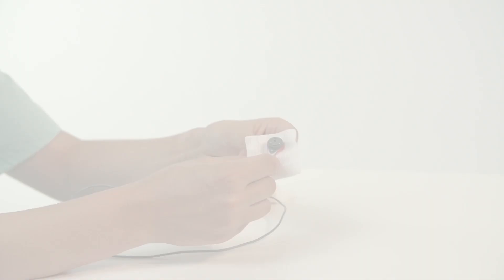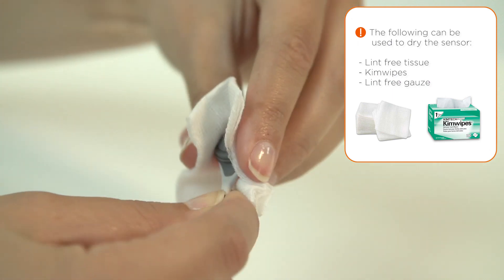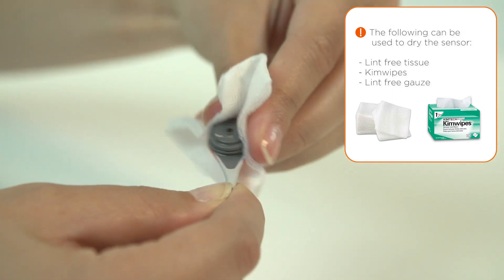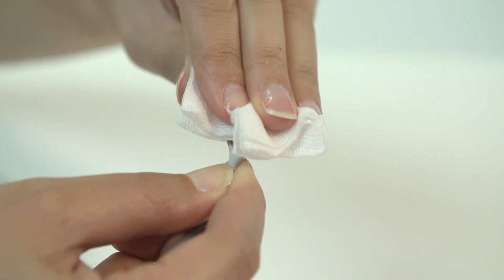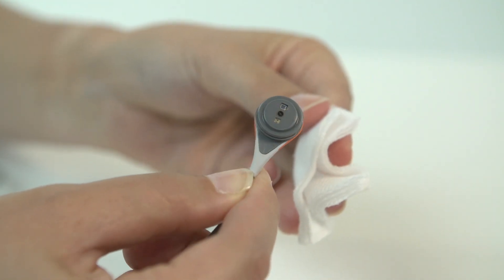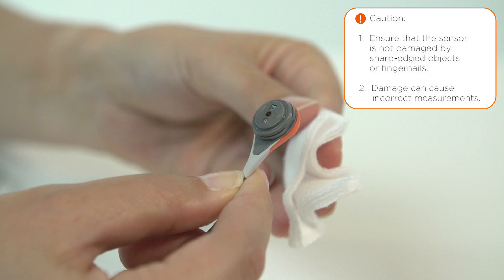Dry the grooves around the sensor with clean, lint-free gauze and make sure there is no gel residue remaining in the grooves. Gently tap the gauze on the sensor surface to dry. Do not rub the sensor surface.